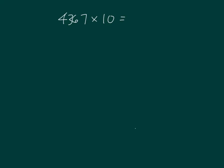How about 4,367 times 10? Well, it would be equal to 4,367 tens, which is written as 4,367, 0, or the number 43,670. Within a place value chart, it would look like this.